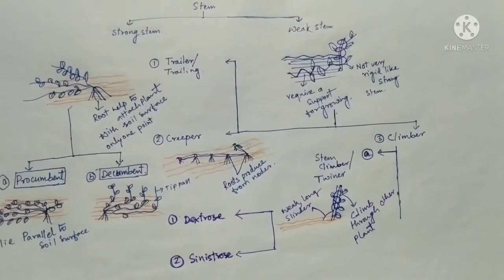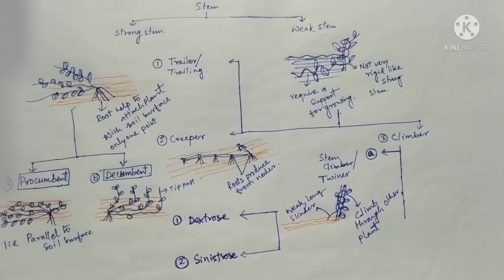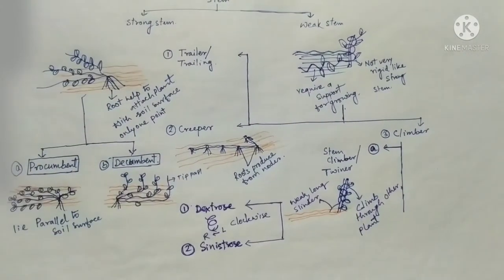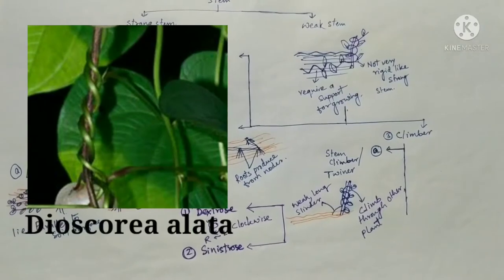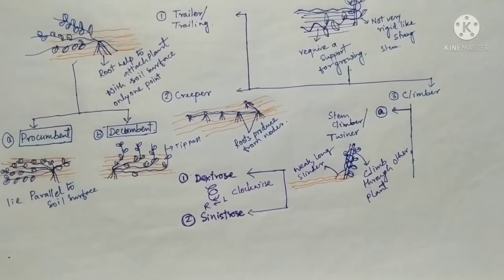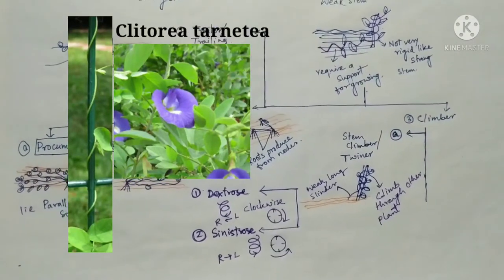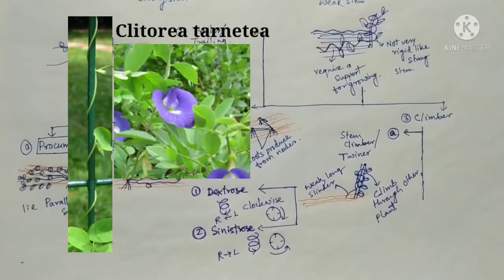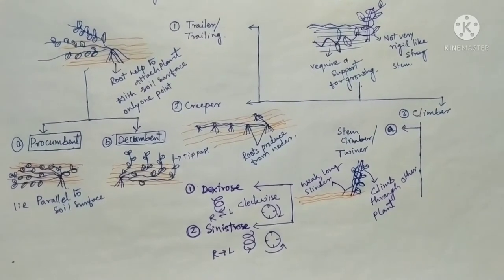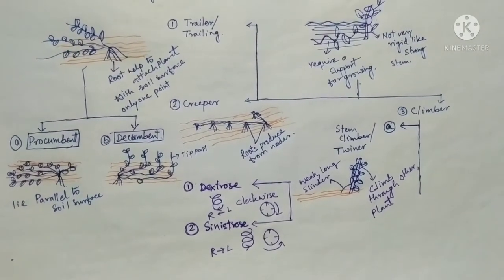Stem climbers divide into two types: dextrose and sinistrose. When the climber grows from left to right — clockwise — this type of climber is known as dextrose. When the climbing direction is right to left — anti-clockwise — it is considered sinistrose. When clockwise climbing is present, it is considered dextrose type.